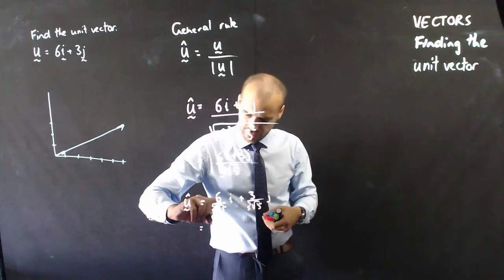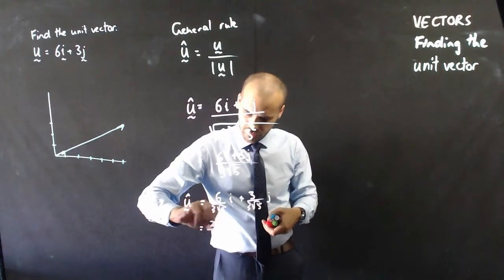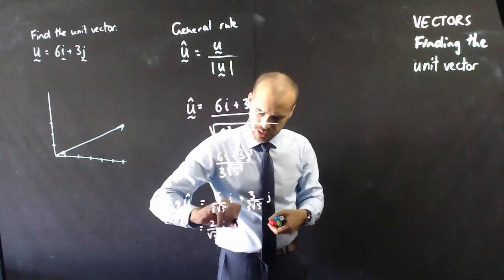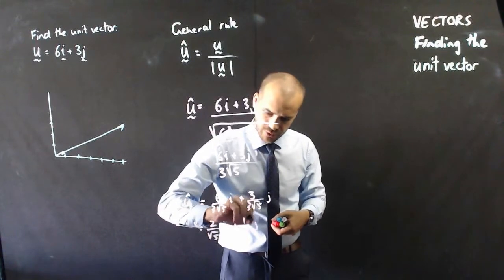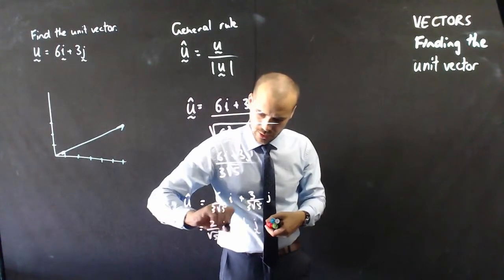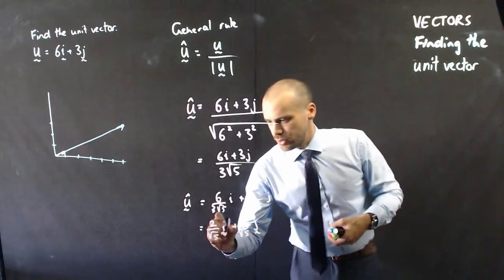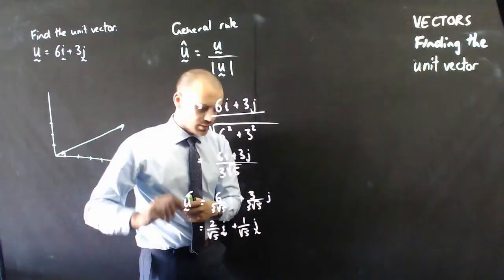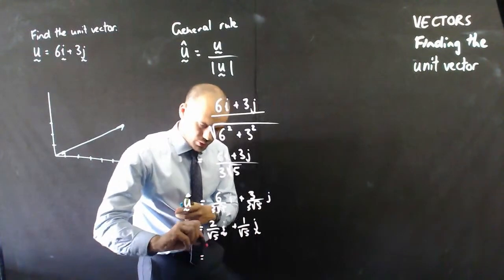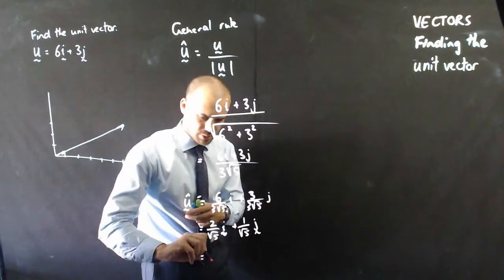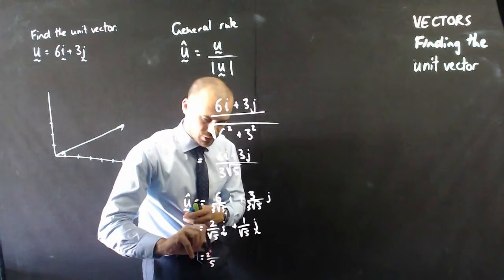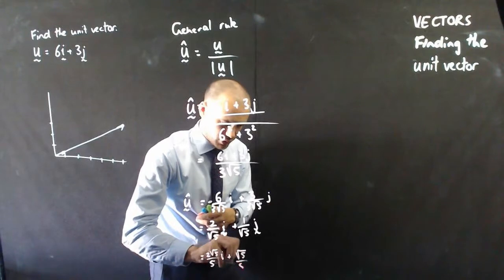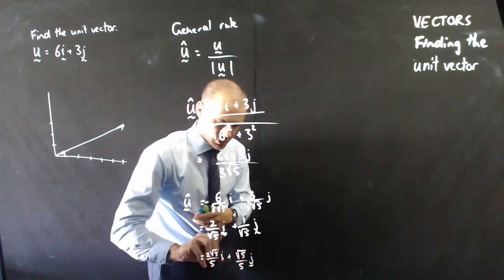We'll have 2 over root 5 there, i, plus 1 over root 5j there. Do I want to rationalize denominators? Sure. Why not? So, it's going to be 2 root 5 over 5i plus root 5 over 5j.